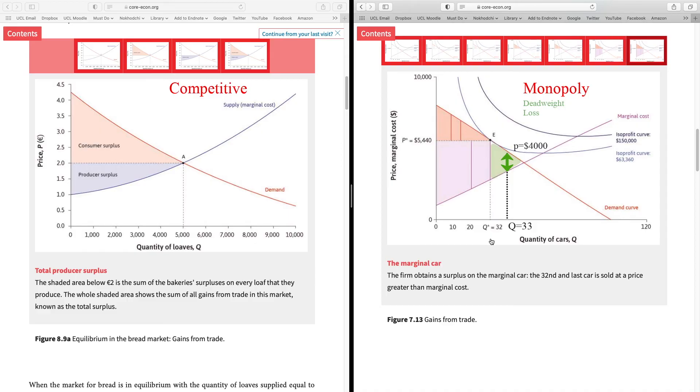Because of that, Beautiful Car stops at 32 cars. They decide not to serve that 33rd customer. And in this way, you see a wasted opportunity, a consumer benefit that was never realized. This is a good example of how a monopoly market is not efficient.